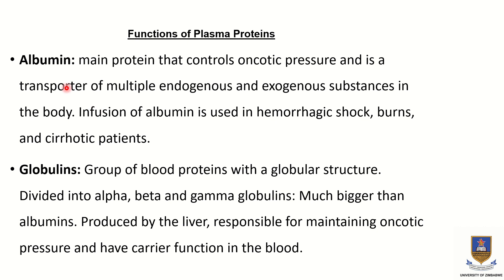Albumin is the main protein that controls oncotic pressure inside the blood. It also transports multiple endogenous and exogenous substances in the body, such as hormones and substances which we ingest in our diet. Infusion of albumin is mostly used when one has hemorrhagic shock, burns, or is a cirrhotic patient, because these conditions lead to a low plasma volume.